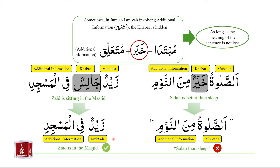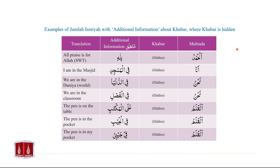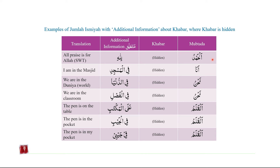Let us look at some examples of jumla-ismiyah involving mutallik where the khabar is hidden. In this table, we have examples of jumla-ismiyah with mutallik where the khabar is hidden. For example, alhamdulillahi — All praise is for Allah subhanahu wa ta'ala. Alhamdulillahi is a jumla-ismiyah where alhamdu is muptada, the khabar is hidden, and lillahi is mutallik or additional information. Please note that lillahi is a murakkab-e-jaari — it has lam-e-jarah followed by ism allahi that is majroor.